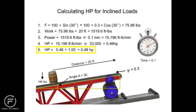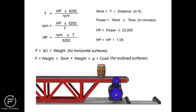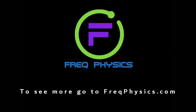As expected, it takes a stronger motor to move weight up an incline than on a horizontal surface. The relationships among horsepower, speed, RPM, work, power, and force allow technicians and system designers to determine the appropriate characteristics of motors, cylinders, and other fluid system components required to operate any system. We hope you enjoyed this video, and for more lessons and videos go to FreakPhysics.com.